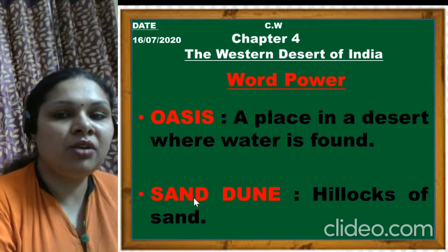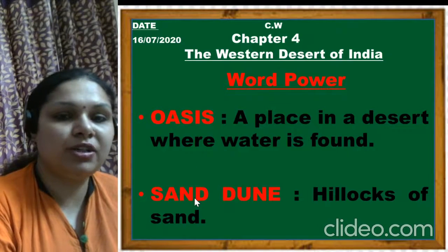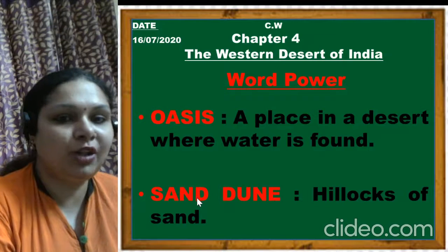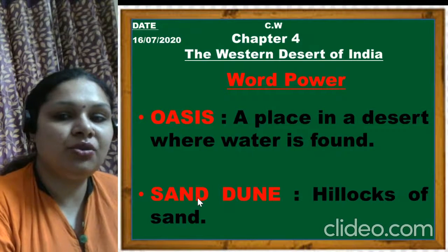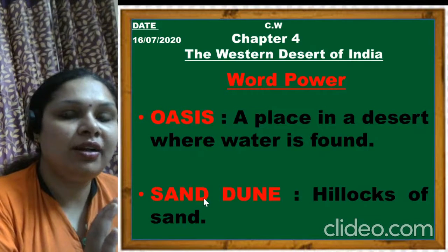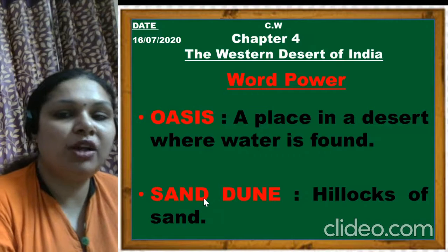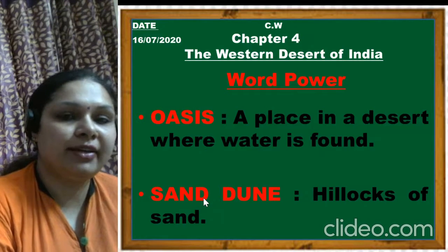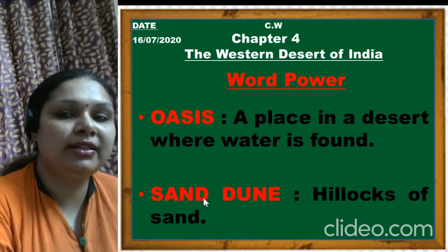The second Word Power is sand dunes. Sand dunes are hillocks of sand - that is, small hills of sand. What are sand dunes? Sand dunes are small hills of sand or hillocks of sand found in the desert.